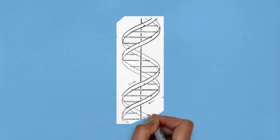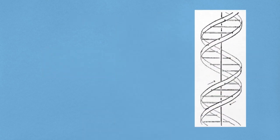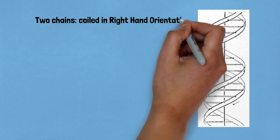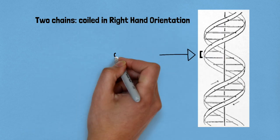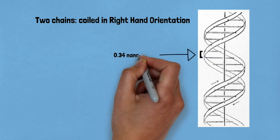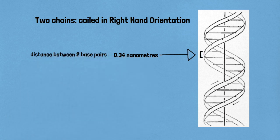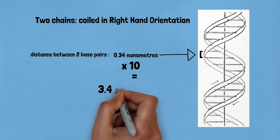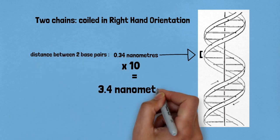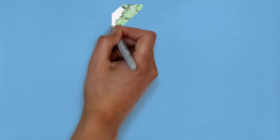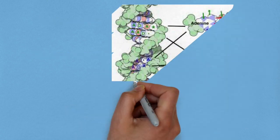Adenine forms two hydrogen bonds with thymine and guanine forms three hydrogen bonds with cytosine. The two chains are coiled in the right-handed orientation. The distance between one base pair is 0.34 nanometres and there are 10 base pairs in each turn, so the pitch — the distance covering 10 base pairs — is 3.4 nanometres.